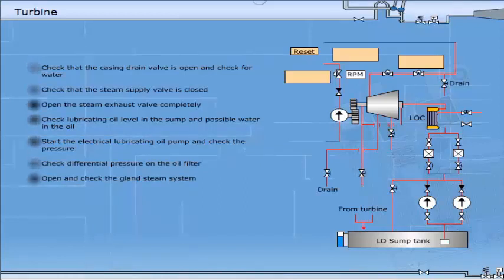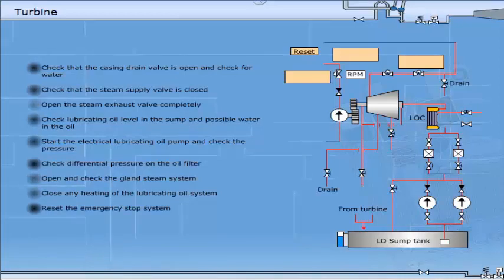Open and check the gland steam system. Adjust the gland steam pressure. When there is a minor gland steam leak to the atmosphere, open to the gland steam condenser. Close any heating of the lubricating oil system. Reset the emergency stop system.